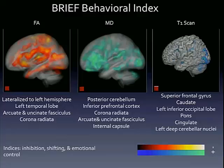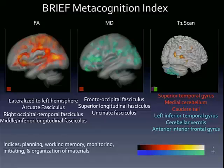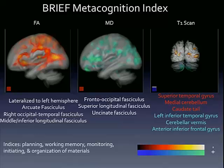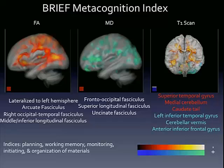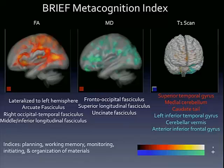Next, the BRIEF metacognition index — you'll see here that it's very similar to the BRIEF behavioral. It's very lateralized to the left hemisphere. The diffusion here in the MD image is a little bit more diffuse in the left hemisphere. Again, because the color is reversed, this is representative of better planning abilities, better working memory, monitoring, initiating, and organizational abilities.